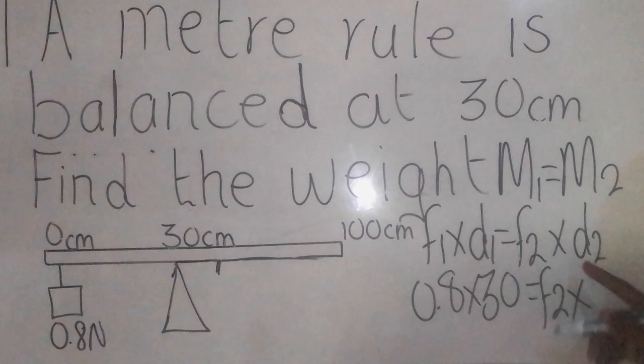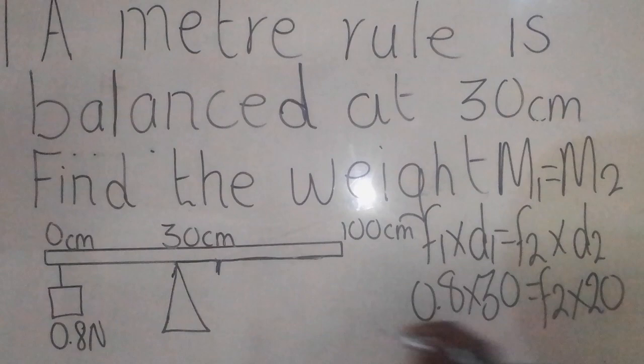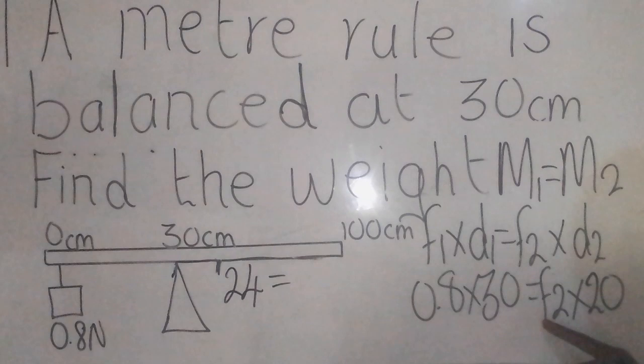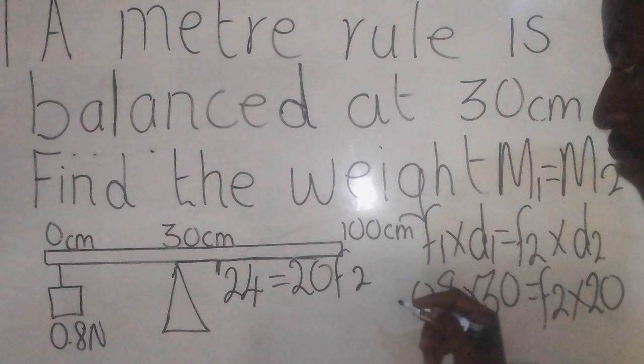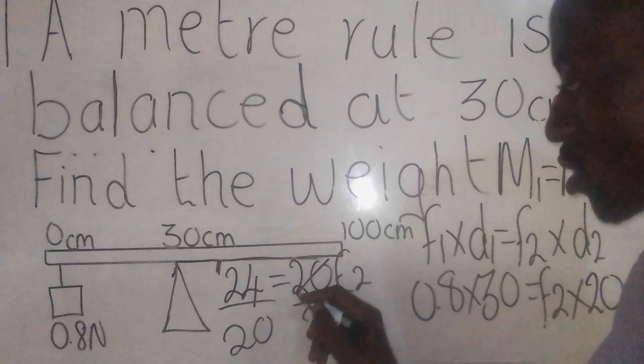So distance 2 is 20. 0.8 times 30 gives me 24. Force 2 times 20 gives me 20F2. You need to divide by 20 on both sides, you cancel out like this.